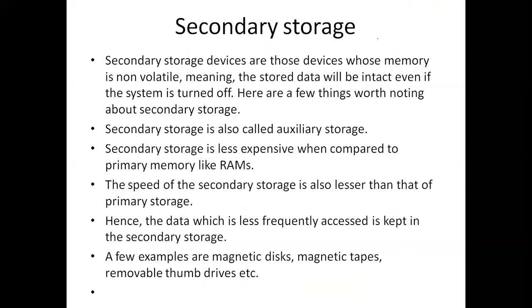The next topic is secondary storage. Secondary storage devices are devices whose memory is non-volatile. Non-volatile means the data is stored permanently — even when the power is gone, the data is retained. Secondary memory is also called auxiliary storage. It is less expensive, and its speed is very slow. Data that is less frequently used is stored here. Examples include magnetic disks, tapes, removable thumb drives, pen drives, etc. All these are examples of secondary storage.